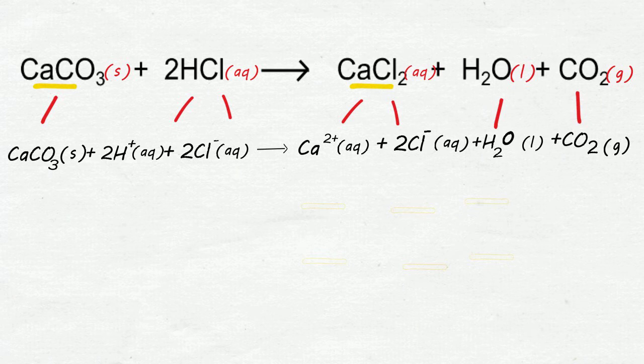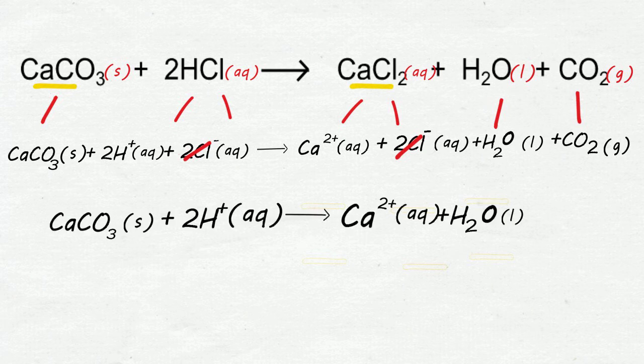Cancel out the spectator ion, chloride. And we get the net ionic equation.